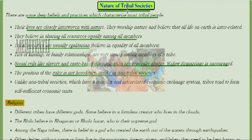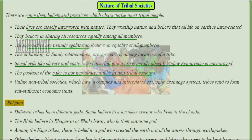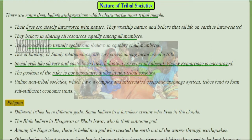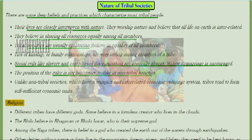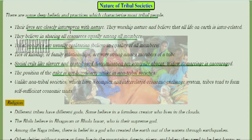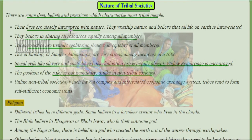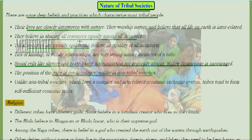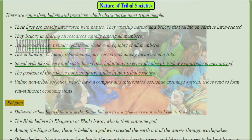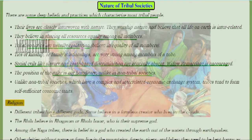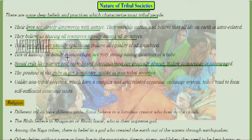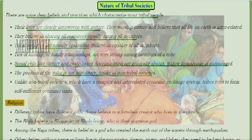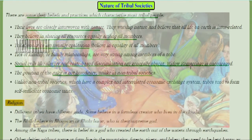These tribal people have some deep beliefs and practices. They live closely interwoven with nature, worshipping it and believing that all life on earth is interrelated. They believe in sharing resources among all members of society. These societies are usually egalitarian — meaning they believe in equality — and have strong ties of kinship and family relationships. Slavery and caste-based systems are generally absent.